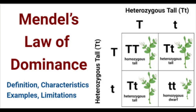Big T representing dominant tall and little t representing runt or dwarf. Both of them are heterozygous for big T, little t, which means both parents are showing two different alleles — one dominant, one recessive — one tall, one short.